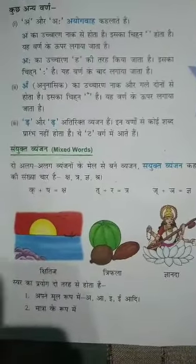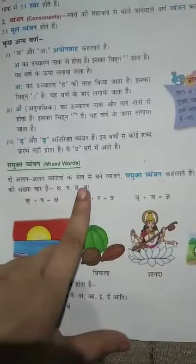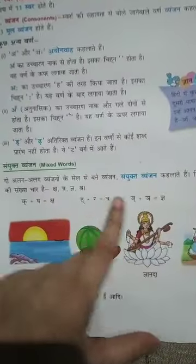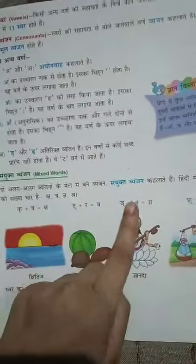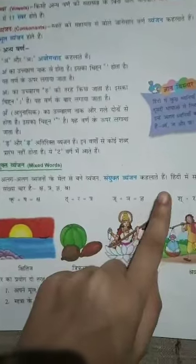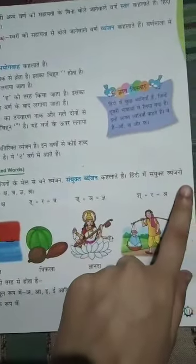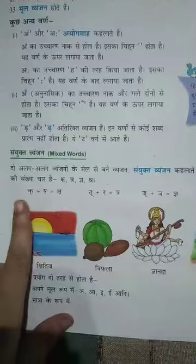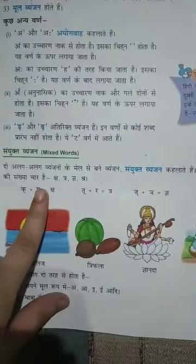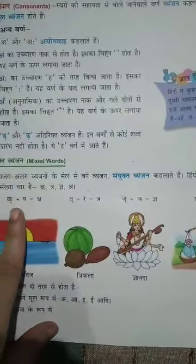Look here fully. Doh alag alag Venjano ke meel se bane Venjan — consonants formed by combining two different consonants — are called Sayyukht Venjan. Hindi mein Sayyukht Venjano ki sankhiya char hai. In Hindi, there are four Sayyukht Venjan.